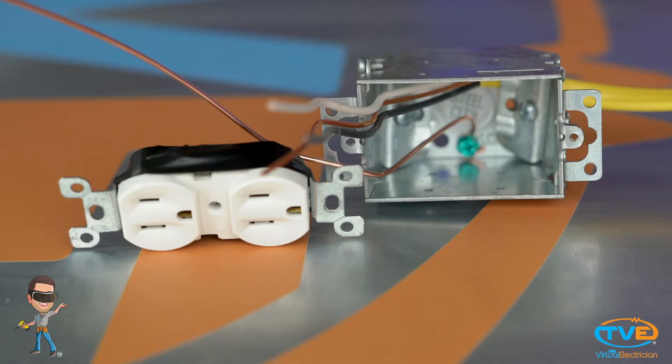After you're done, you can wrap a piece of electrical tape around the screw terminals. This is especially good to do if you are installing the outlet into a metal box. You don't want the screws to touch any metal.